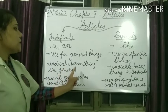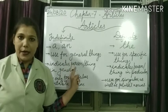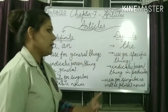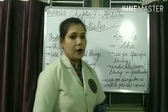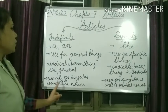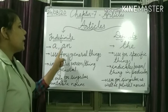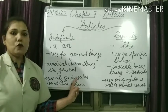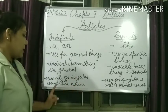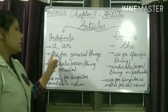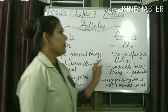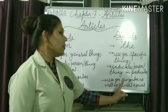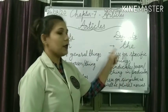The indefinite article indicates a person or thing in general. The definite article The indicates a person or thing in particular. Indefinite articles A and An are used only for singular countable nouns. On the other hand, the definite article The can be used for singular as well as plural nouns.